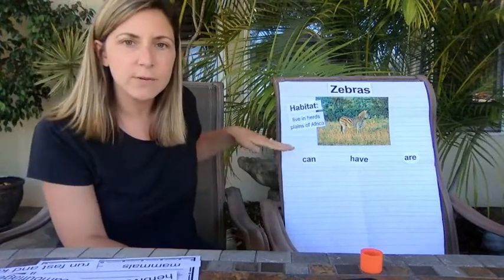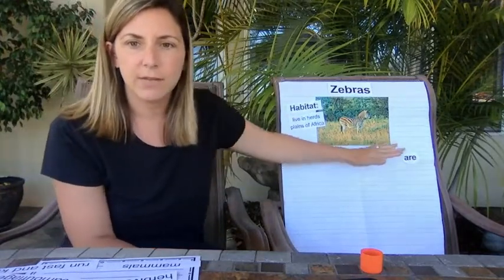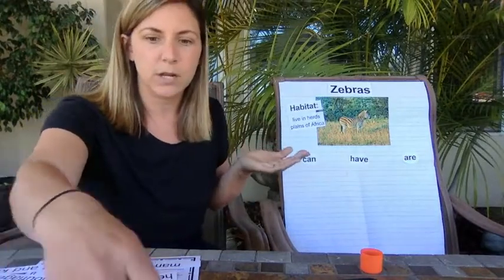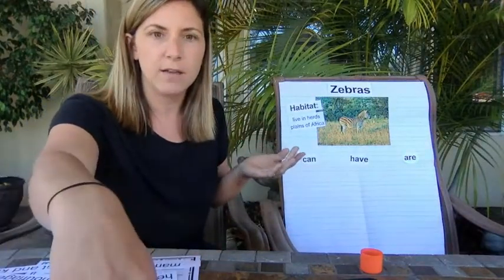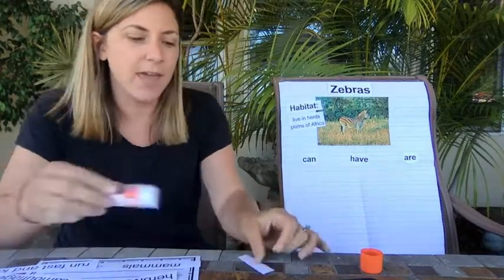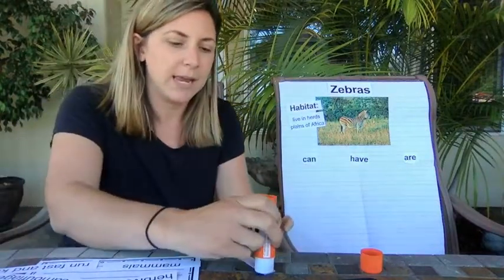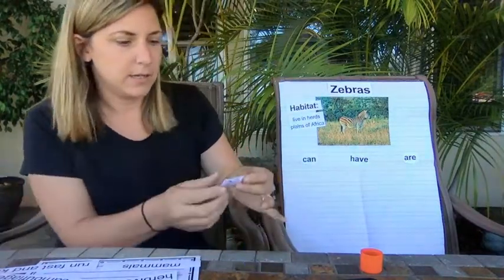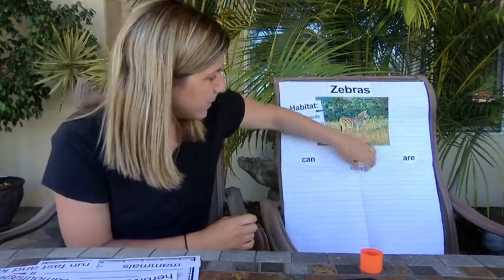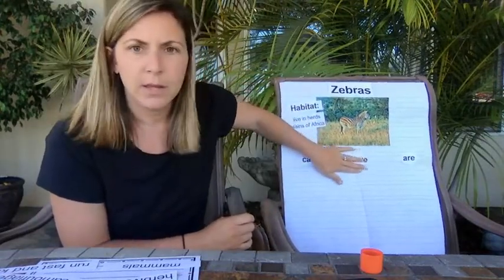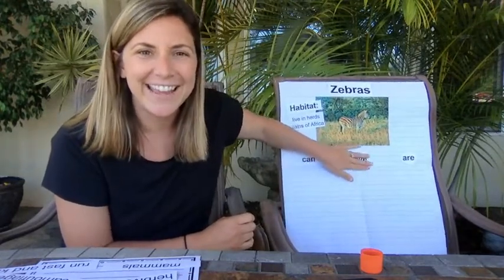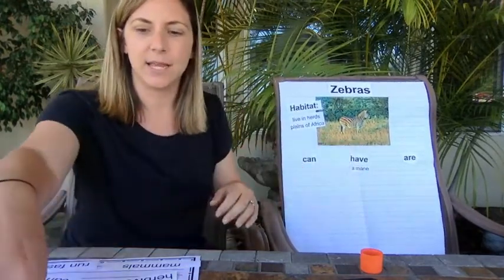Let's see what zebras can, have, and are. I have some facts here and let's see which one each goes under. Zebras have a mane, right here on their head. What other animal has a mane? A lion — a male lion has a mane.